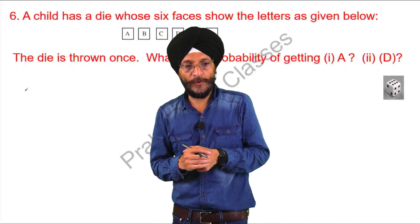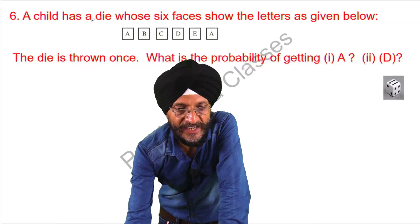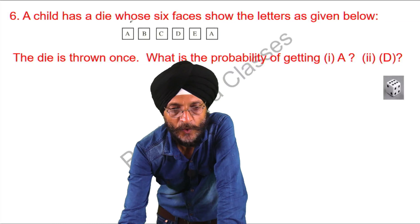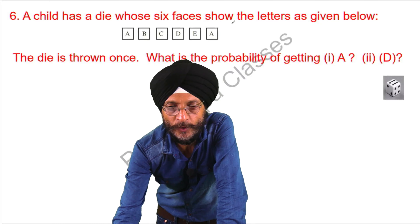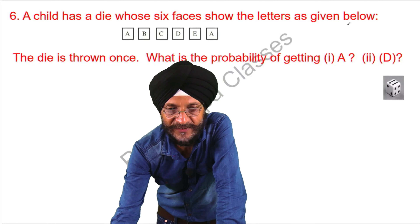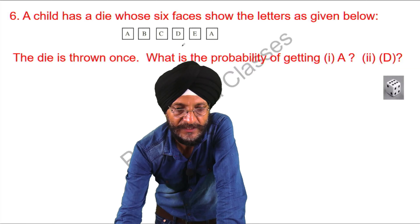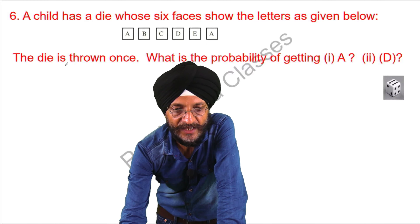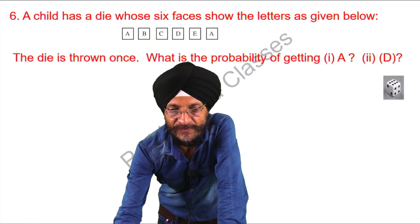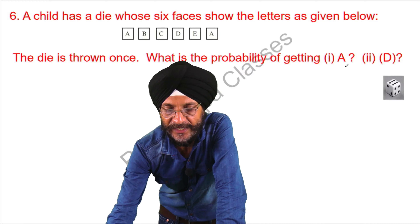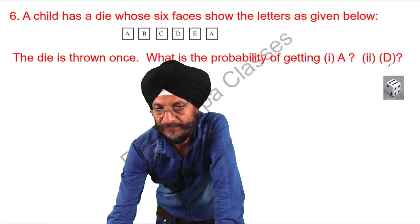The question before us is: a child has a die whose six faces show the letters as given below. The die is thrown once. What is the probability of getting A and D?